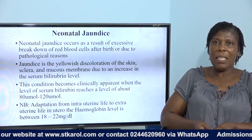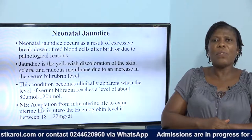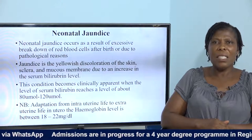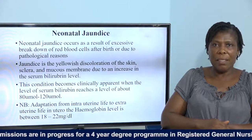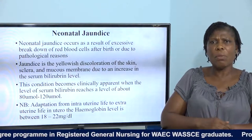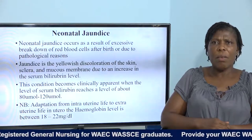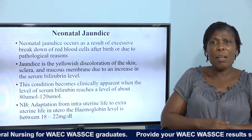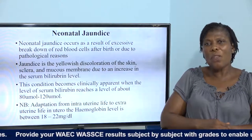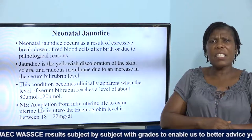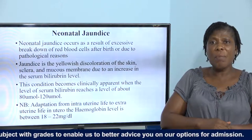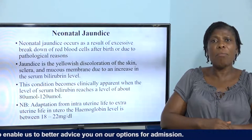Let's look at neonatal jaundice. When we talk of neonatal jaundice, we are looking at jaundice that occurs within the first day of life to 28 days. Neonatal jaundice occurs as a result of excessive breakdown of red blood cells after birth, or due to pathological reasons — disease of the baby or that of the mother that affects the newborn. Jaundice is a yellowish discoloration of the skin, sclera, and the mucous membrane due to an increase in the serum bilirubin level.